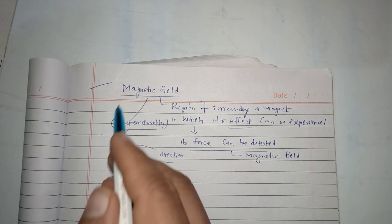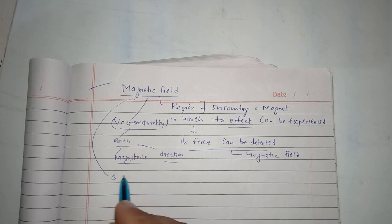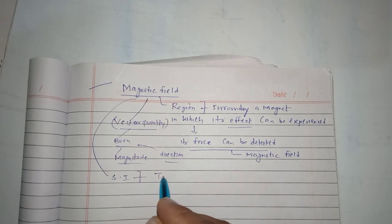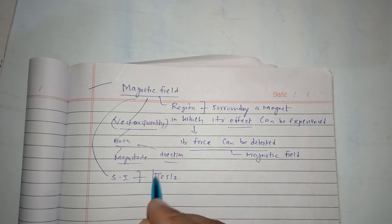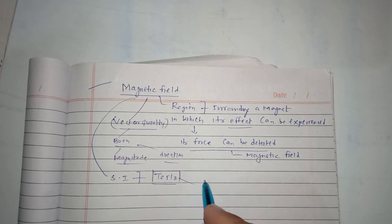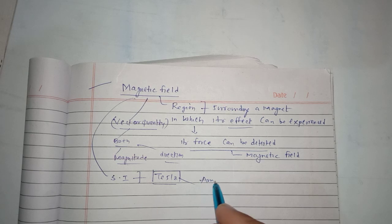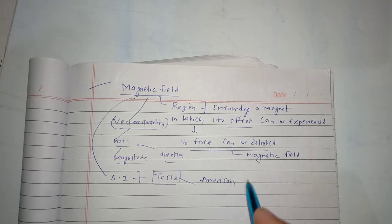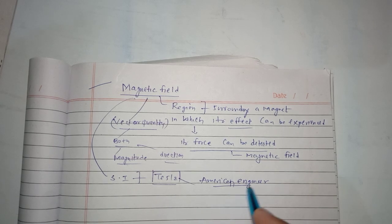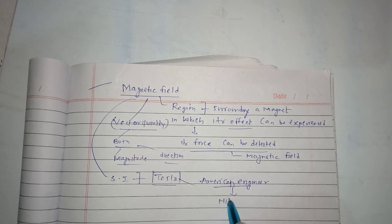The SI unit of magnetic field is Tesla, which is named after an American engineer named Nikola Tesla.